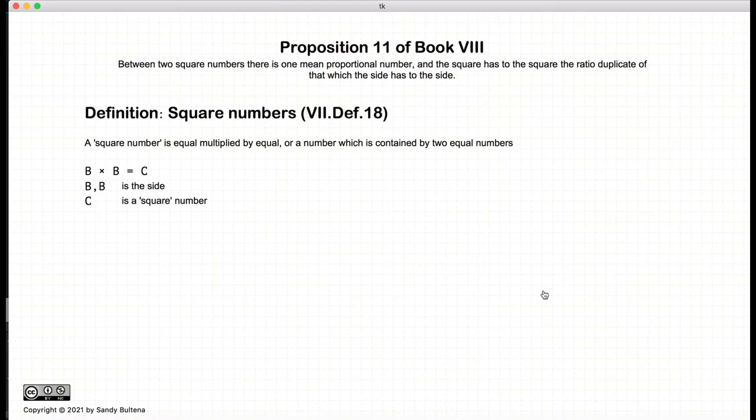Before we get started, we need to define square numbers. According to definition 18 of Book 7, a square number is an equal multiplied by an equal, or a number which is contained by two equal numbers. In other words, it's a planar number where the sides are both the same. So b times b creates c, c is a square.